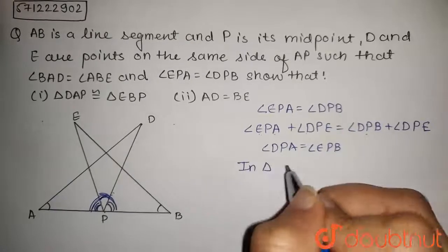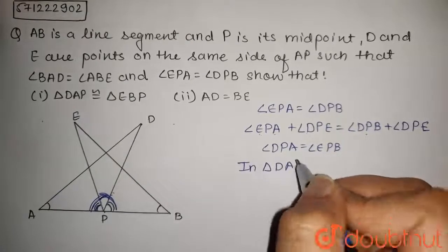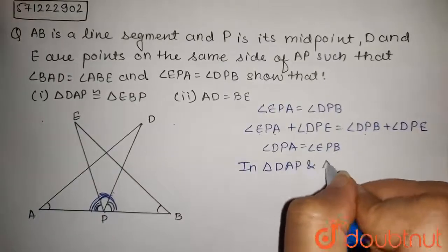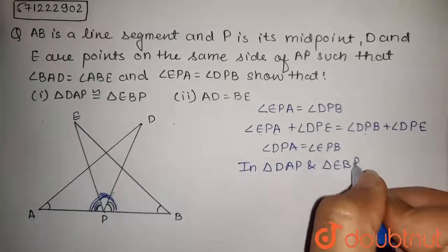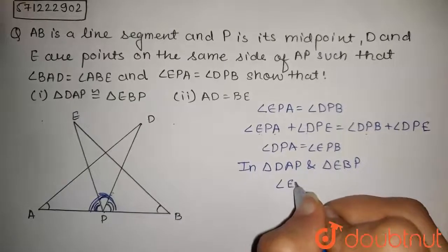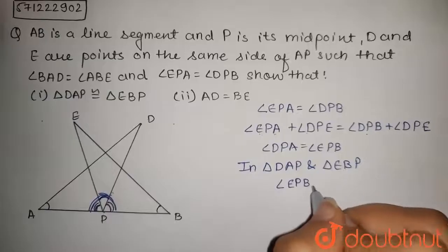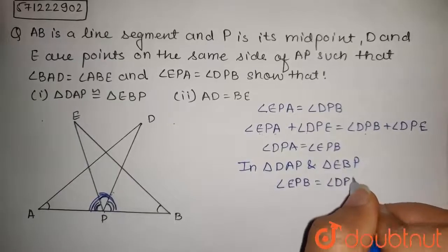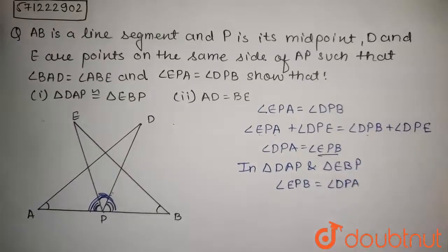Now, let's see in triangle DAP and triangle EBP. In these two triangles, we have that angle EPB is equal to angle DPA as we have proved earlier.